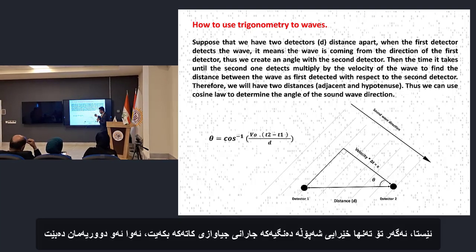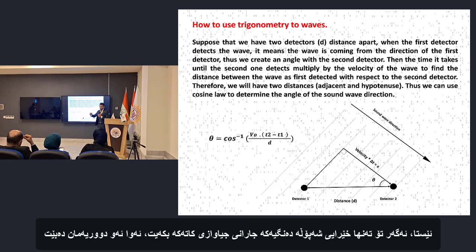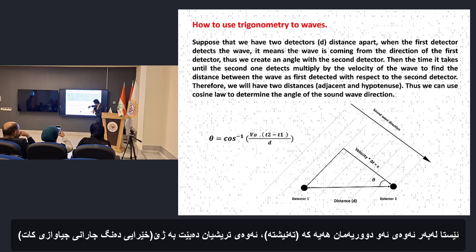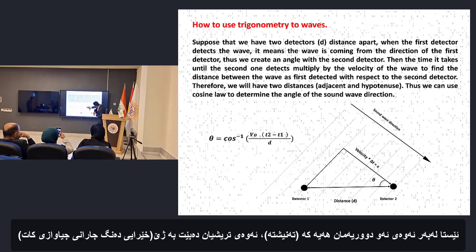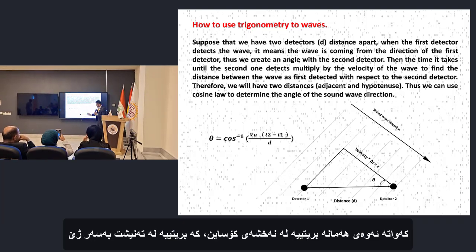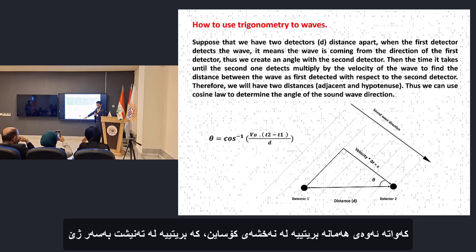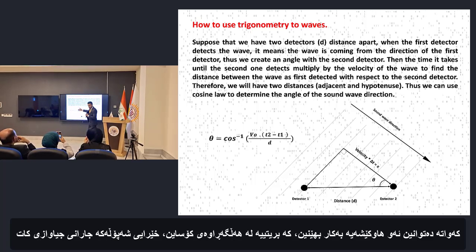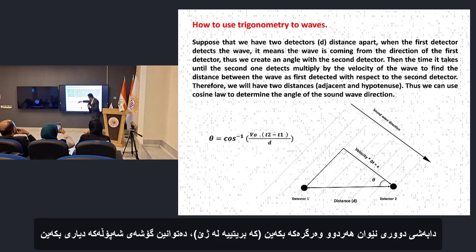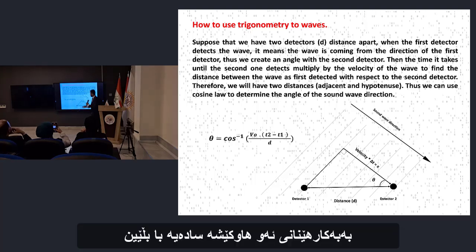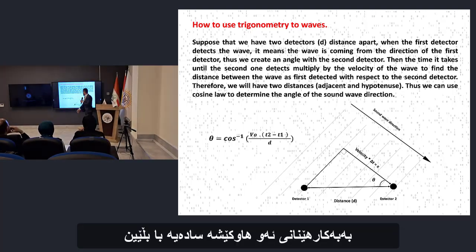If we multiply the velocity of the sound wave by the time difference, we will have this distance, which is the hypotenuse, and the distance between the detectors will be the adjacent. So what we have here is the cosine function — the adjacent over hypotenuse. We can use the formula: cosine inverse of the velocity of the wave multiplied by the time difference, divided by the distance between the two detectors, to determine the angle of the wave.